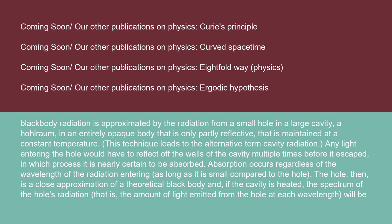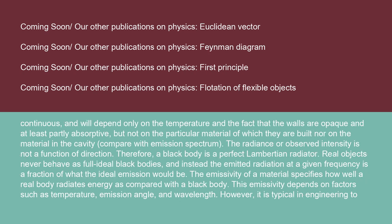The hole is a close approximation of a theoretical black body, and if the cavity is heated, the spectrum of the hole's radiation — that is, the amount of light emitted from the hole at each wavelength — will be continuous, and will depend only on the temperature and the fact that the walls are opaque and at least partly absorptive, but not on the particular material of which they are built nor on the material in the cavity.